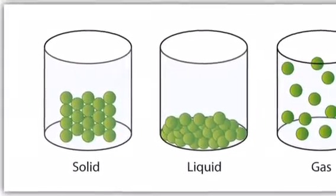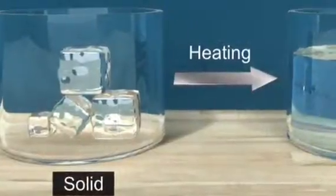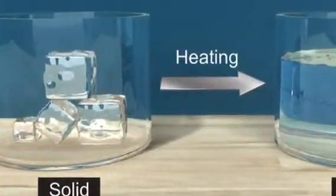There are three main phase changes: solid, liquid, and gas. The transformation between solid to liquid is called melting.